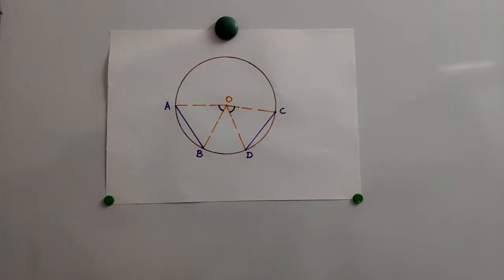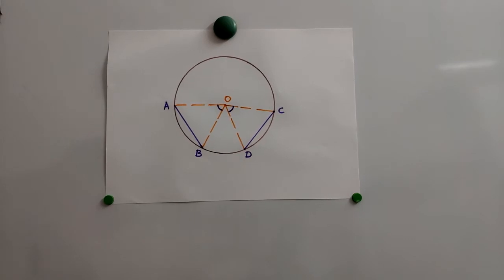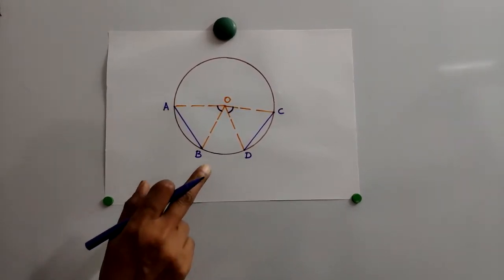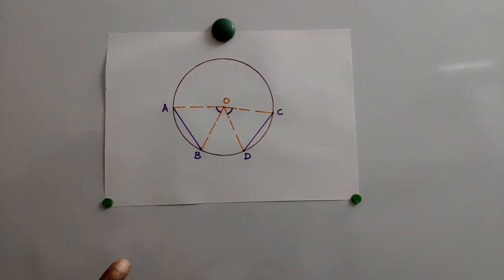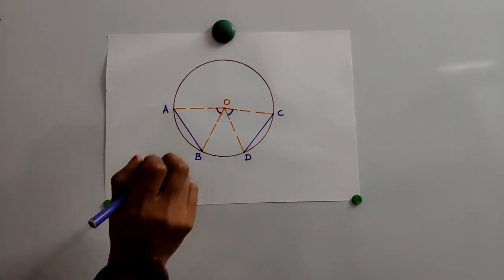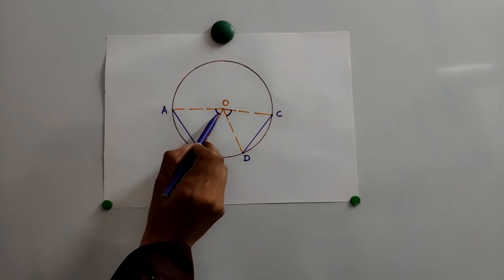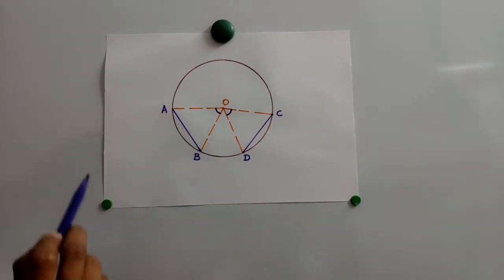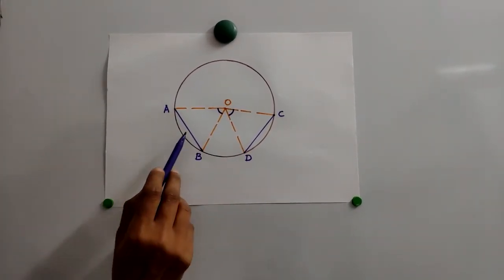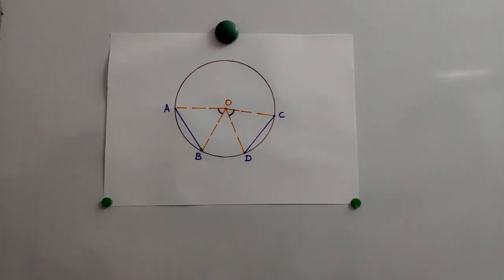Next, we are going to prove that if two chords of a circle subtend equal angles at the center, then the chords are equal.